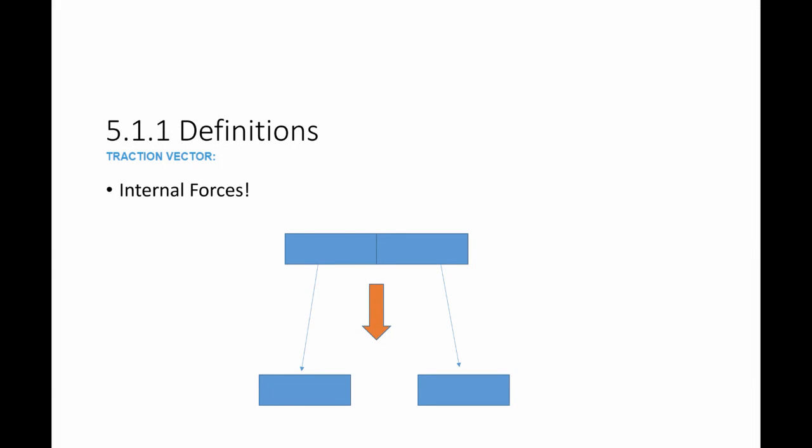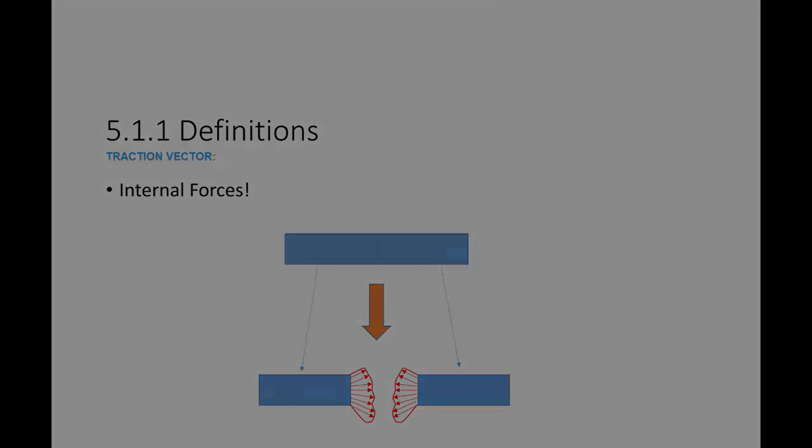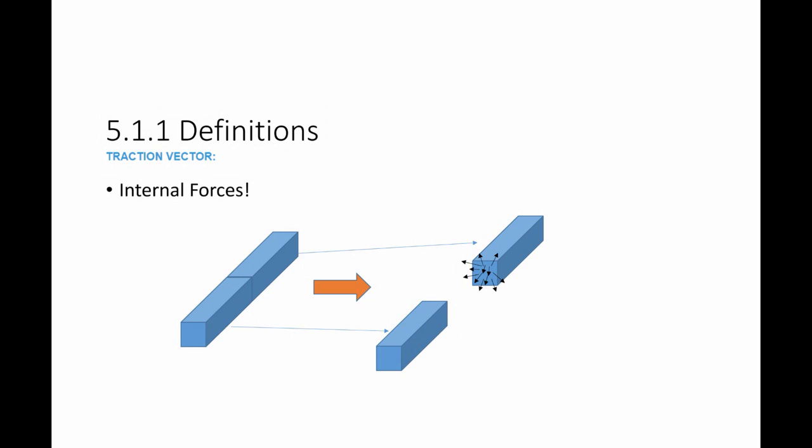First, we are going to understand the concept of internal forces. If I have a bar under external loads and I open the bar up and look inside the material, I will find some small forces acting on the material points on that surface, exerted by one side on the other, and the two sides have equal and opposite forces. These forces are acting in 3D, so those internal forces are force vectors, and each vector has three components in 3D space.